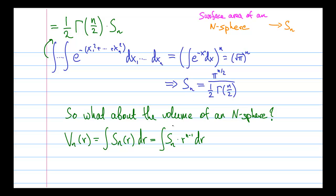But as you can see, S sub n here is independent of r. So all we need to work out is the integral of r to the power of n-1 dr, which is just r to the n divided by n. And for a unit sphere, when r is equal to 1, the answer is just S sub n divided by n.